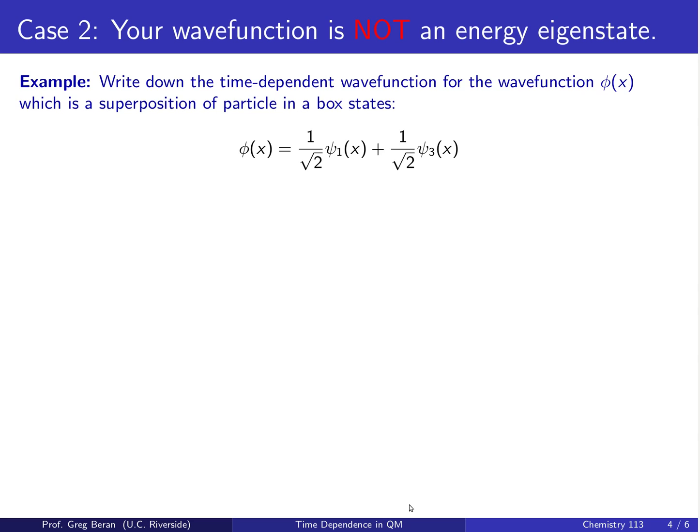It might be, for example, a superposition of two particle-in-the-box states. In this case, I've written it as 1 over square root of 2 ψ₁(x) plus 1 over square root of 2 ψ₃(x). If we have a wave function like this and we want to write down its time-dependence, we just multiply each one of the energy eigenstates, the ψ₁ and the ψ₃, by their own time-dependent factors.